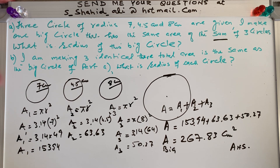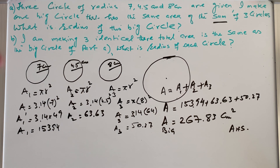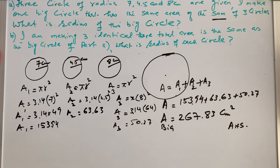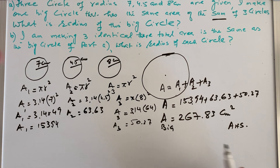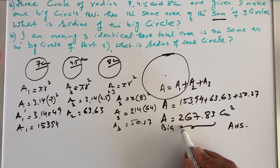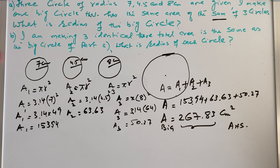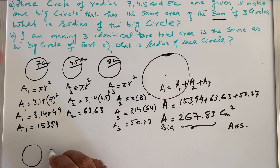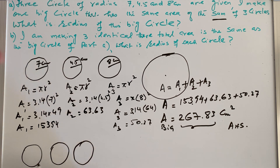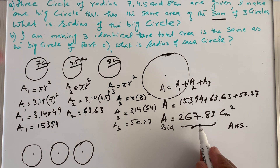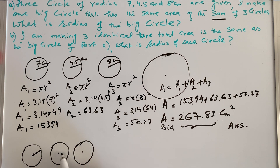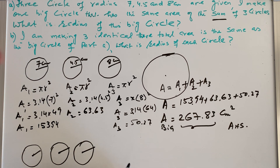Part B says I am making three identical circles whose total area is the same as the big circle area. So the total area of the three identical circles equals 267.83 centimeters squared. I need to find the radius of each of these identical circles.